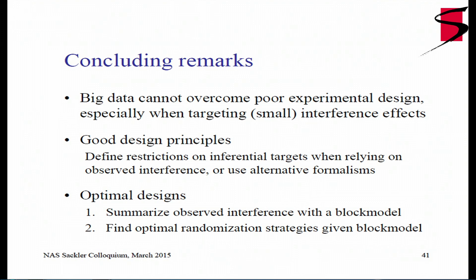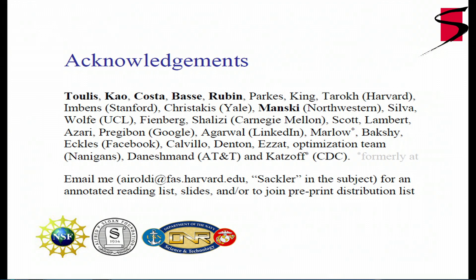To conclude: big data cannot overcome poor experimental design, especially when targeting small interference effects. There are good design principles — essentially restricting the inferential target — and an optimal design strategy using a block model and optimizing for a randomization using that block model. I want to acknowledge my collaborators, in particular Don Rubin, my colleague, and our students Charles Szymanski, who was instrumental in getting me on this path, and funding from NSF, the Sloan Foundation, and ONR.